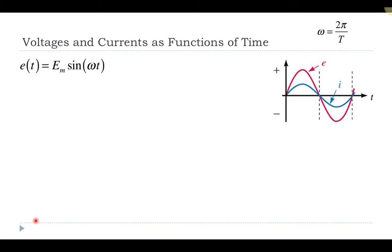We'd like to write an expression for the voltage and the current as functions of time. Assuming that the voltage or current starts off at time t equal to zero and follows a sinusoidal waveform, the voltage can be written as whatever the amplitude of that sine wave is times sine of ωt, where ω is the angular frequency, which is 2π over the period.